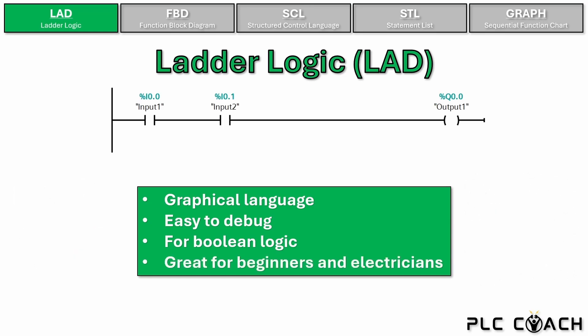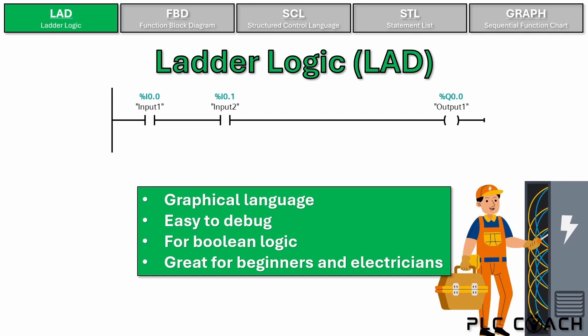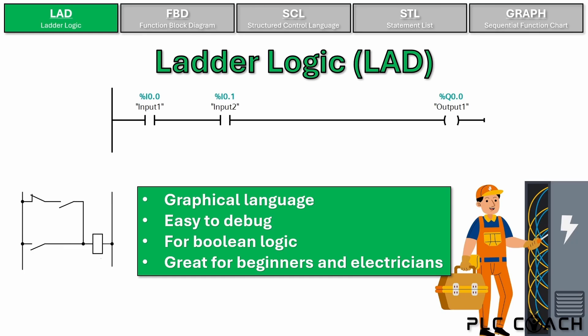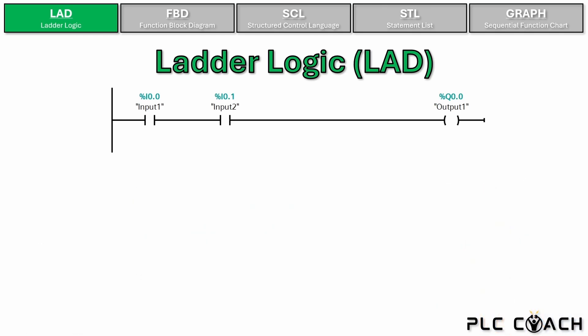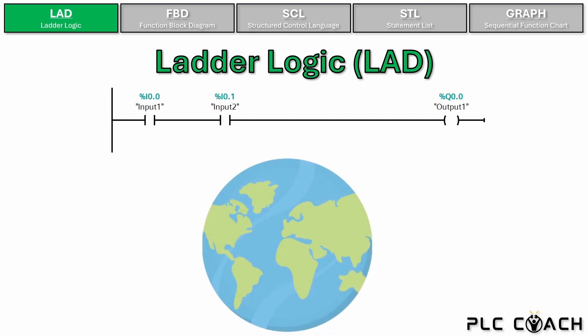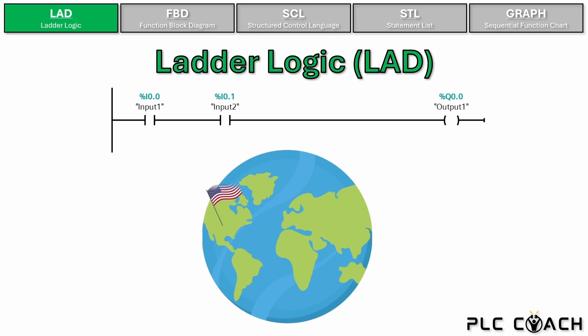Ladder logic is great for beginners and electricians. This programming language looks a little bit like an electrical circuit diagram, and that's no coincidence. In the past, machines were controlled using relay logic. When PLCs were invented, the goal was to create a programming language that would simplify the transition from relay logic to the PLC. This is why the design was modeled after electrical circuit diagrams. Ladder logic is the most widely used programming language in the world. In the United States, for example, this programming language is often regarded as the industry standard. The popularity of programming languages also depends on the country you live in — in Germany, for example, function block diagram is widely used.